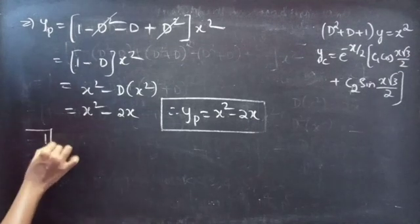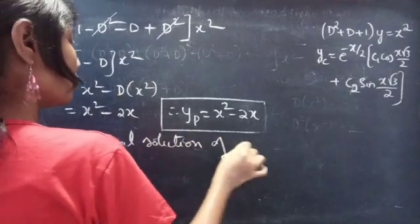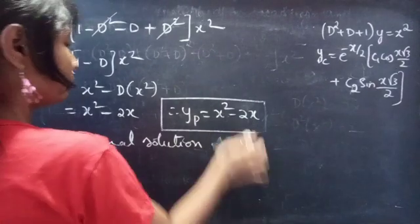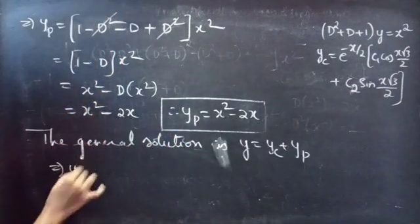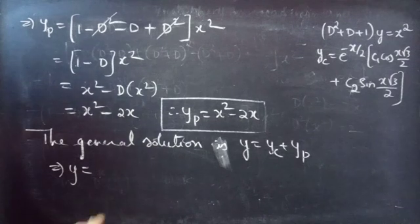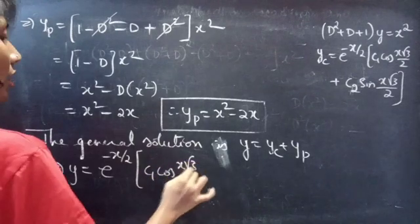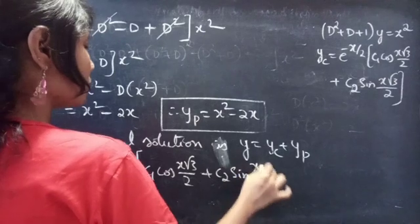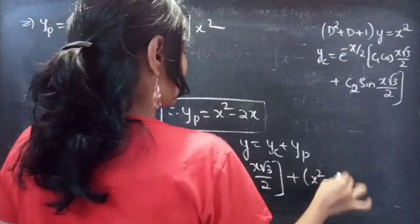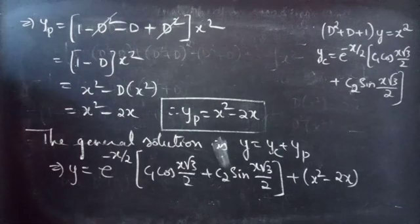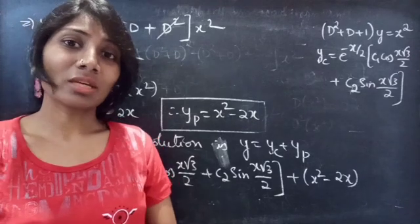Now let's write the general solution. The general solution is y = yc + yp, so: y = e^(−x/2) · [c₁cos(x√3/2) + c₂sin(x√3/2)] + x² − 2x. So we have seen a problem from higher order linear differential equations in this video. Hope you will understand. We'll see you in the next one. Goodbye!